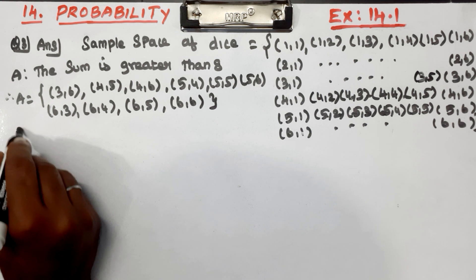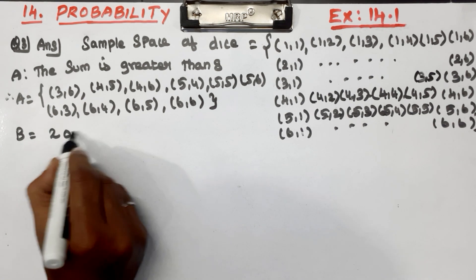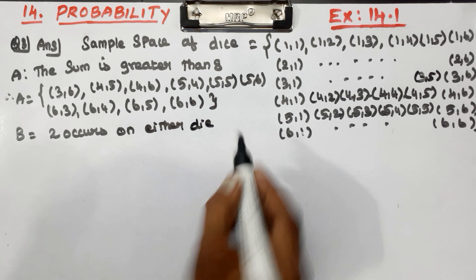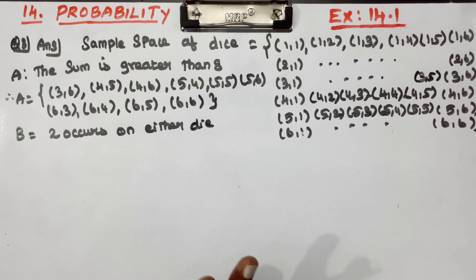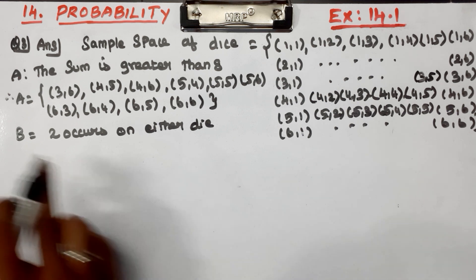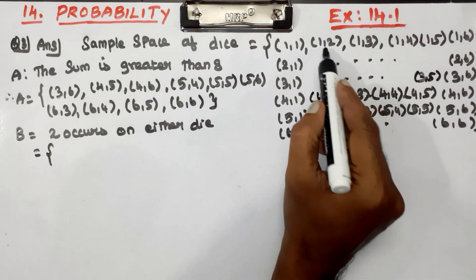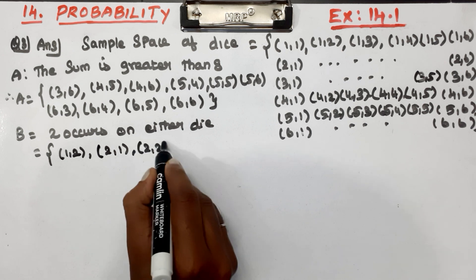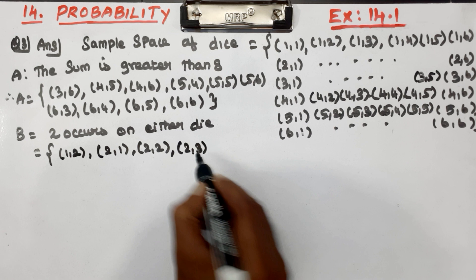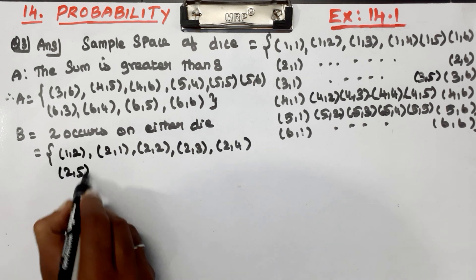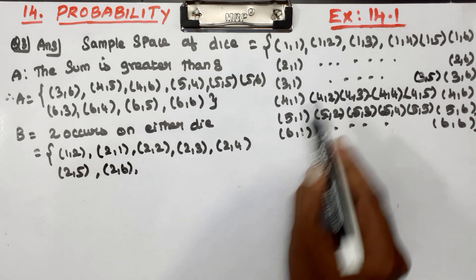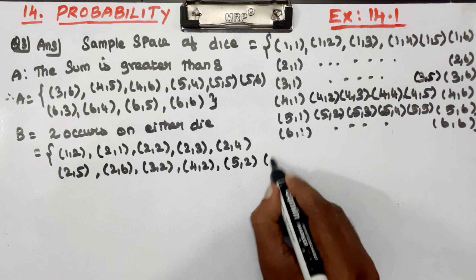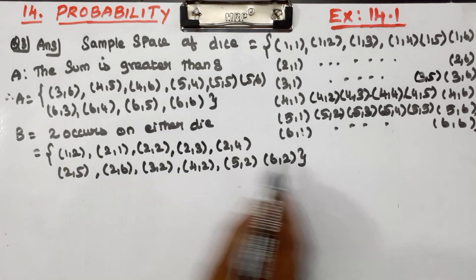Next is Event B. Event B is that a 2 occurs on either die. So we list outcomes where at least one die shows 2: (1,2), (2,1), (2,2), (2,3), (2,4), (2,5), (2,6), (3,2), (4,2), (5,2), (6,2). This is the complete set of Event B.